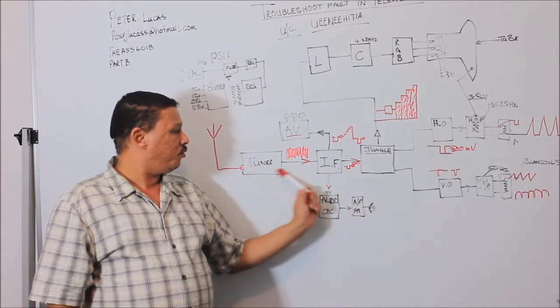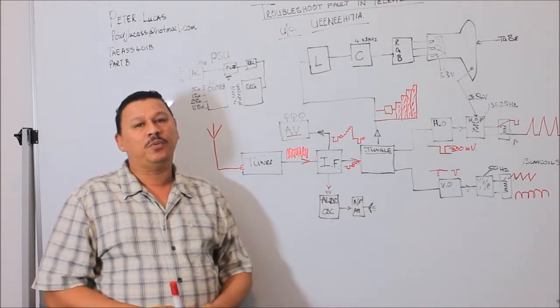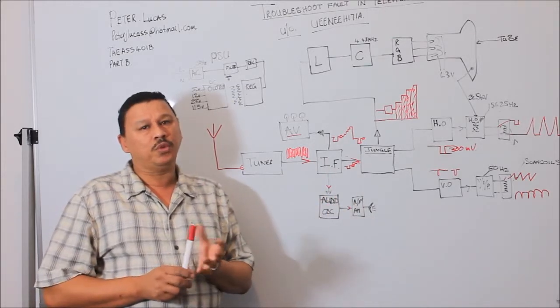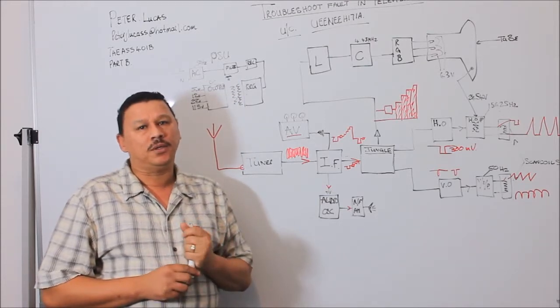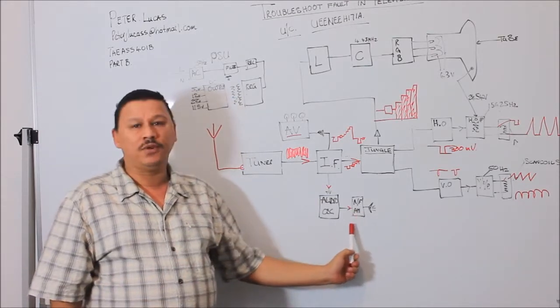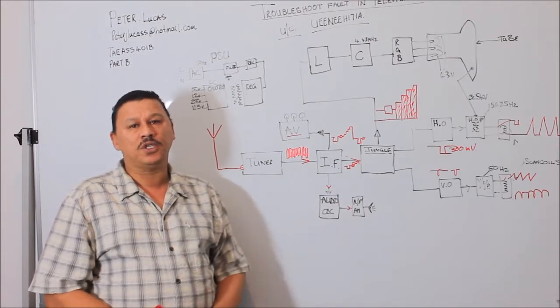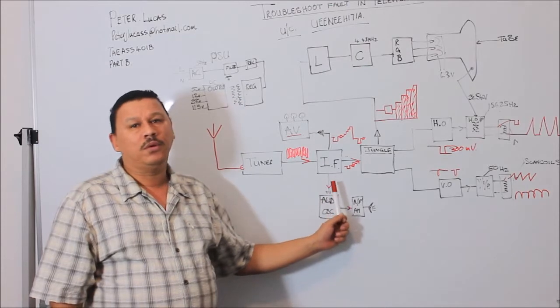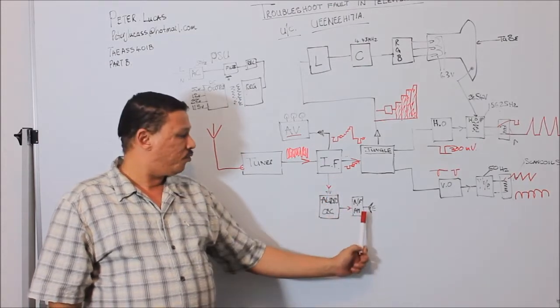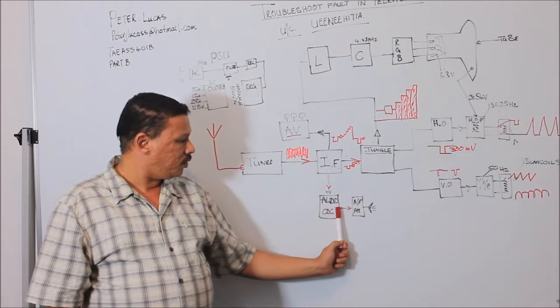These type of faults can basically be fixed or the tools that you would be using is an oscilloscope and a multimeter. So you would look at the DC voltage if the DC voltage is present and then you would look at the audio waveform.